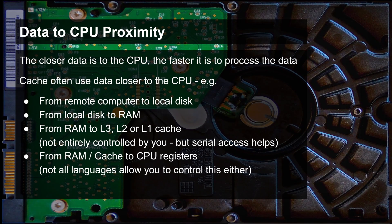The fourth principle is data-to-CPU proximity. The closer data is to the CPU, the faster it is for the CPU to load and process that data. That is why we have so many different data caches at different layers, both in the hardware and in the software.